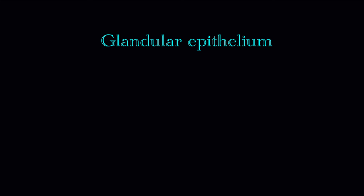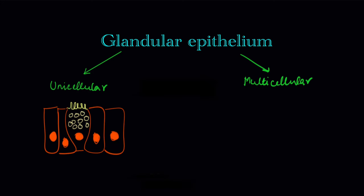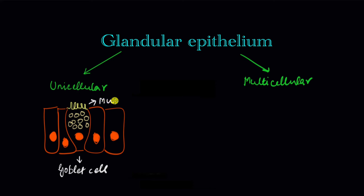Based on how many cells the glandular epithelium has, there are two types: unicellular and multicellular. The most common type of unicellular epithelium is the goblet cell. It is present in different places such as the digestive tract and the respiratory tract, and its job is to secrete mucus at the surface of the epithelium.